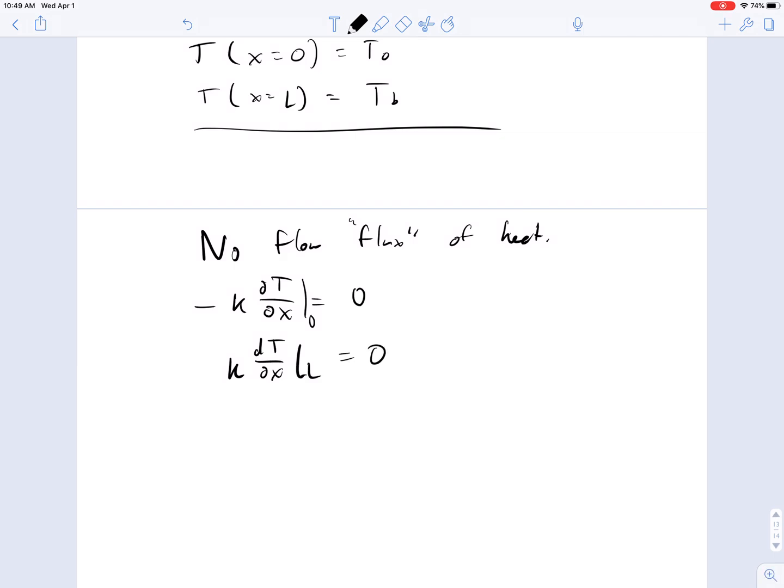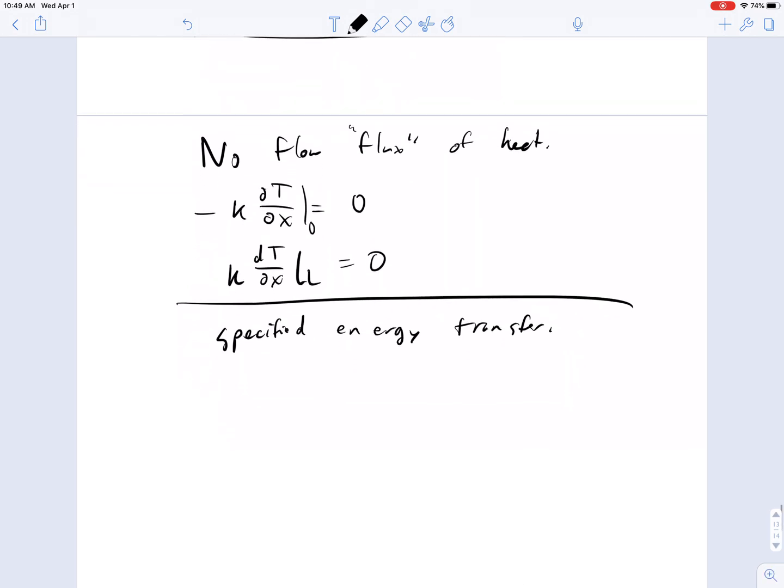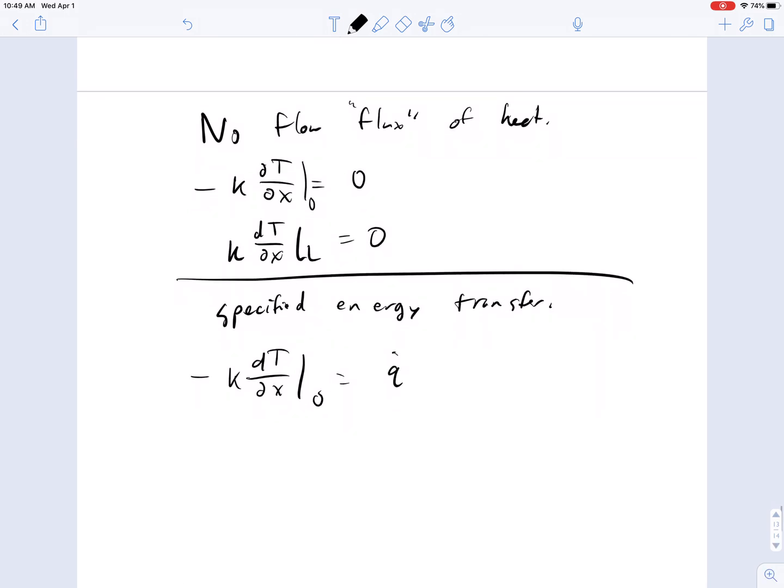And so at the right-hand side, it looks like this. The alternative is to have a specified energy transfer. This is similar to the no heat flow, but instead of it equaling zero, it equals some value q for some heat generated. Maybe it's an electrical source.